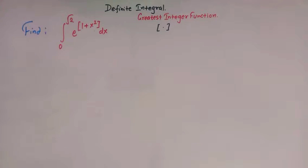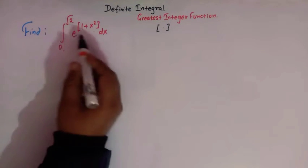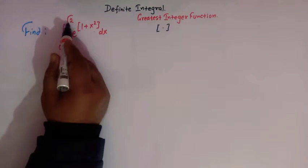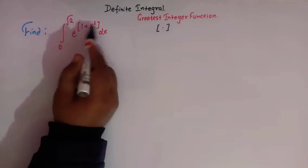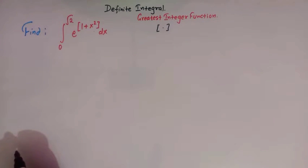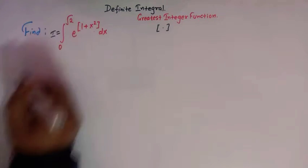Hello viewers. In today's class we are going to discuss yet another important problem from definite integrals. Here we have to evaluate the integral from 0 to square root of 2 of e raised to the greatest integer of 1 plus x squared. So let us call this integral as I.